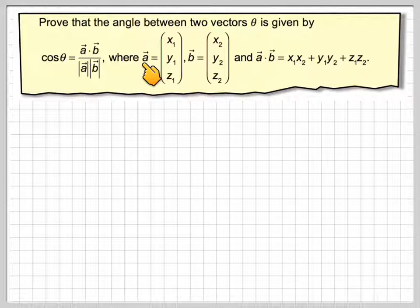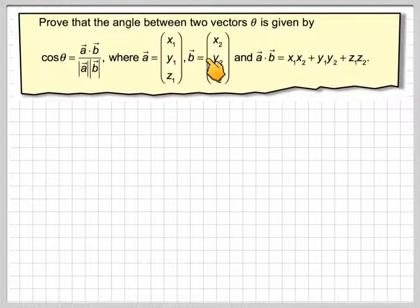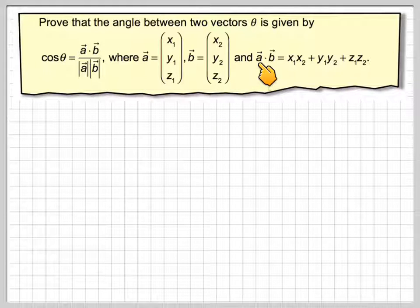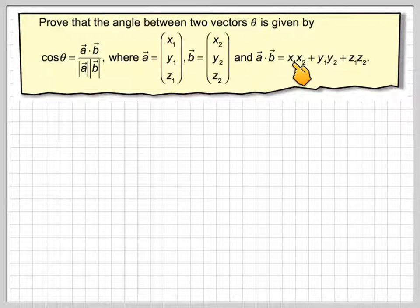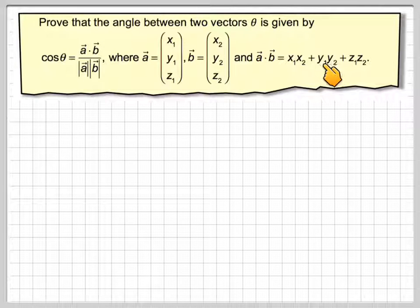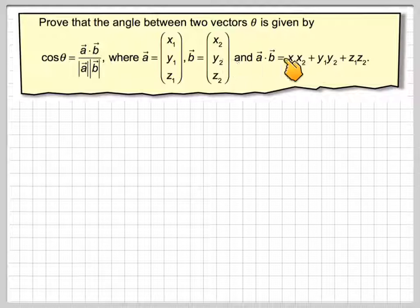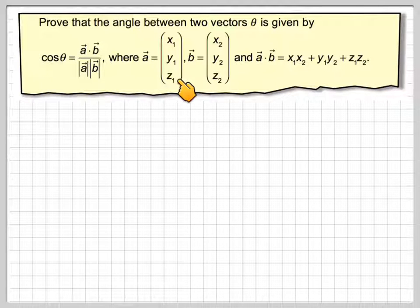Where vector a is (x1, y1, z1) and vector b is (x2, y2, z2). The dot product a dot b, called the scalar product, is x1 times x2, plus y1 times y2, plus z1 times z2.